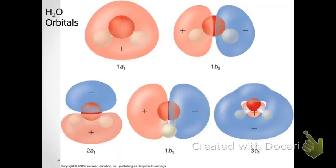This diagram shows the molecular orbitals of water in greater detail, so you can get a better idea of what they look like. The lowest energy A1 orbital shows a completely delocalized electron distribution. Generally, the more delocalization of electrons, the lower the energy of the orbital. This concludes our introduction to molecular orbital theory for polyatomic molecules. The next video will deal with applications of molecular orbital theory to pi electron systems.